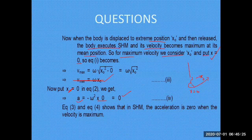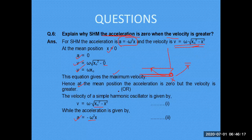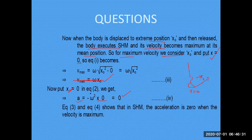This is clear from the concept: in simple harmonic motion, at the mean position the acceleration is 0 and the velocity is maximum. There are two positions — one is the mean position and the other is the extreme position. At the mean position, velocity is maximum and acceleration is 0. At the extreme position, acceleration is maximum but velocity is 0, because x equals x-naught there. So at the point where x equals x-naught, velocity is minimum and acceleration is maximum; and where x equals 0, velocity is maximum and acceleration is zero.